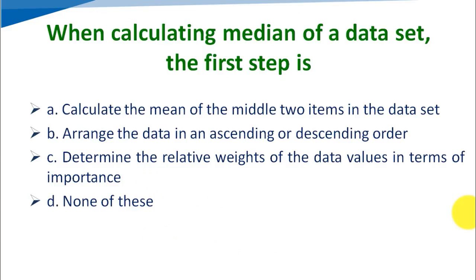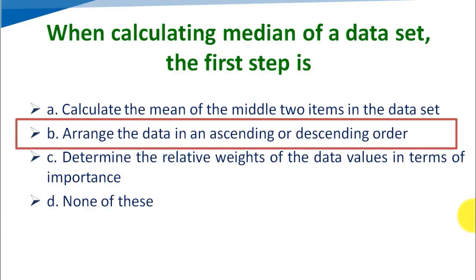When calculating the median of a data set, what is the first step? Option A: calculate the mean of the middle two items, Option B: arrange the data in ascending or descending order, Option C: determine the relative weights of data values, Option D: none of these. The correct answer is Option B, arrange the data in ascending or descending order.